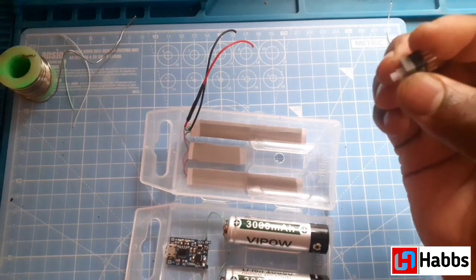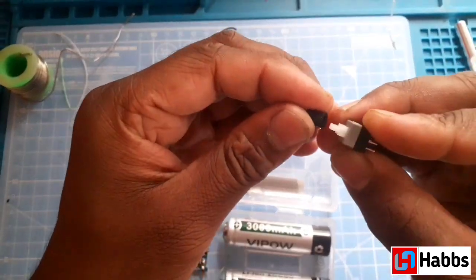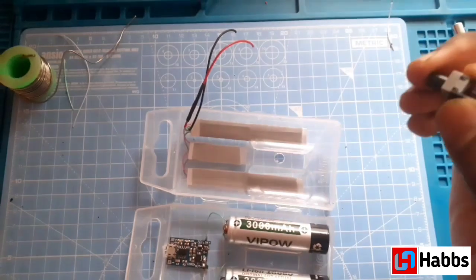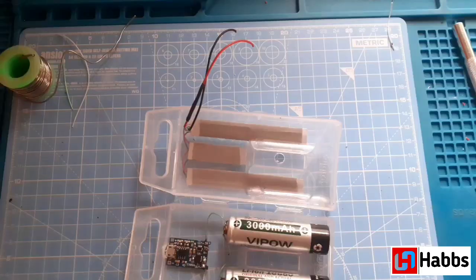Next we need a 6 pin push on off switch with a cap. So we will solder the switch onto a small PCB.